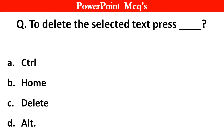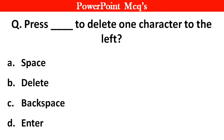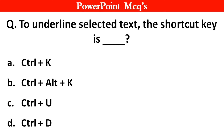Question 21: To delete the selected text, press dash. Options: A. Ctrl, B. Home, C. Delete, D. Alt. Right answer is Option C: Delete. Question 22: Press dash to delete one character to the left. Right answer is Option C: Backspace. Question 23: To underline selected text, the shortcut key is dash. Right answer is Option C: Ctrl + U.